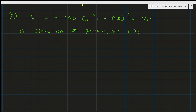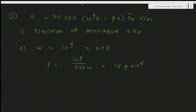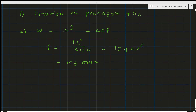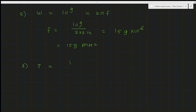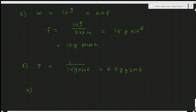Omega is 10^9, which equals 2πf. Solving: f = 10^9 / (2π) = 159 MHz. The time period T = 1/f = 1/(159 × 10^6) = 6.2893 nanoseconds.